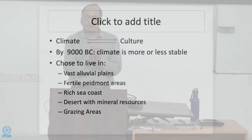Going back to the appearance of ceramics: there has been some kind of link between climate and culture. Somewhere around 9000 BC it becomes more or less stable — the Holocene period begins, major glaciations disappear, and by around 9000 BC you see stable alluvial plains, fertile areas, sea coasts, desert regions with mineral resources, and grazing areas. Population slowly and steadily starts emerging in these areas. From around 9000 BC onwards, these kinds of areas are getting particularly populated.